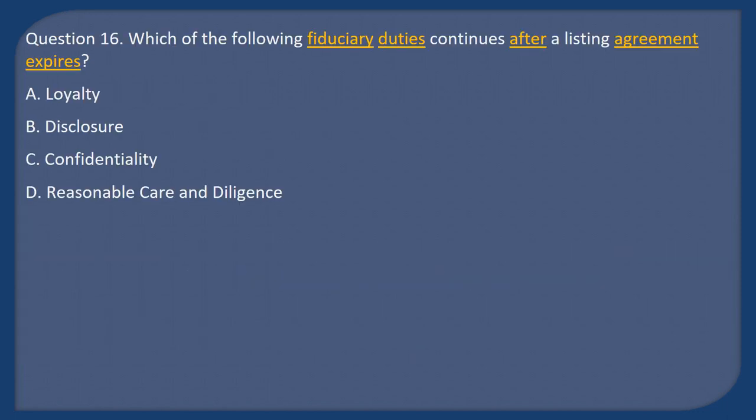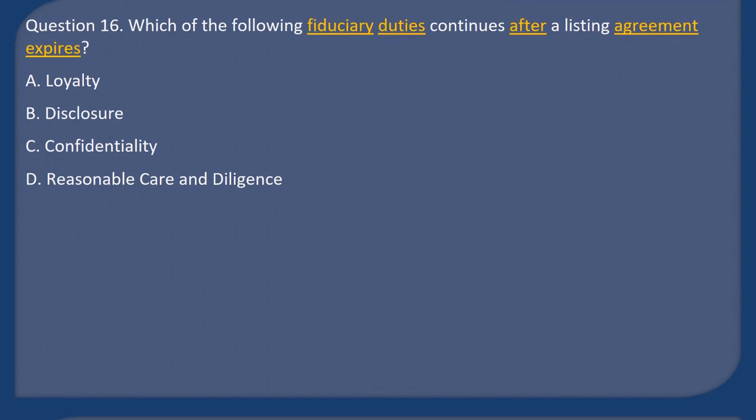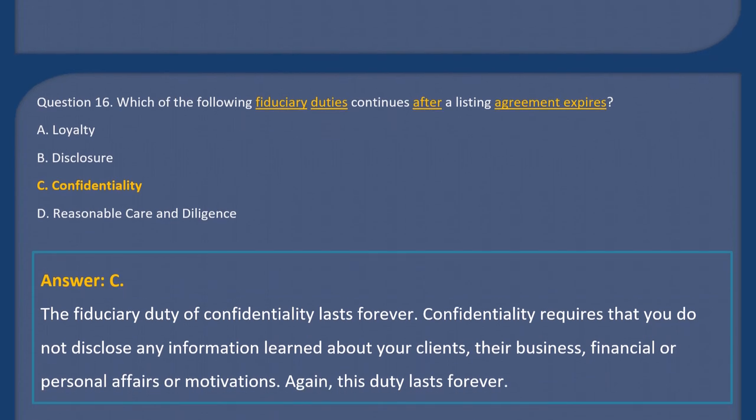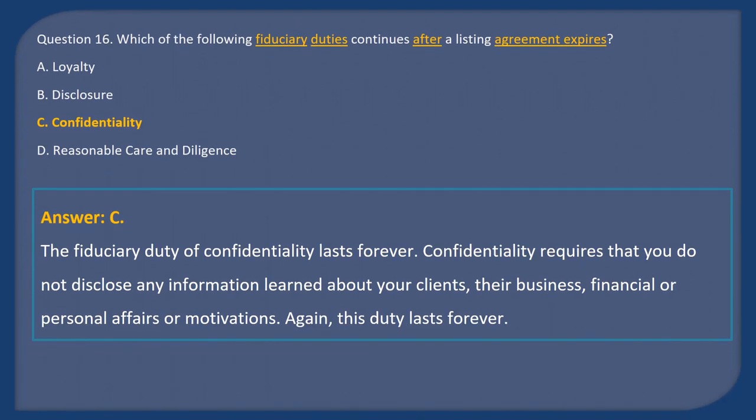Question 16: Which of the following fiduciary duties continues after a listing agreement expires? A) Loyalty, B) Disclosure, C) Confidentiality, D) Reasonable care and diligence. Answer: C. The fiduciary duty of confidentiality lasts forever. Confidentiality requires that you do not disclose any information learned about your clients — their business, financial, or personal affairs or motivations. This duty lasts forever.